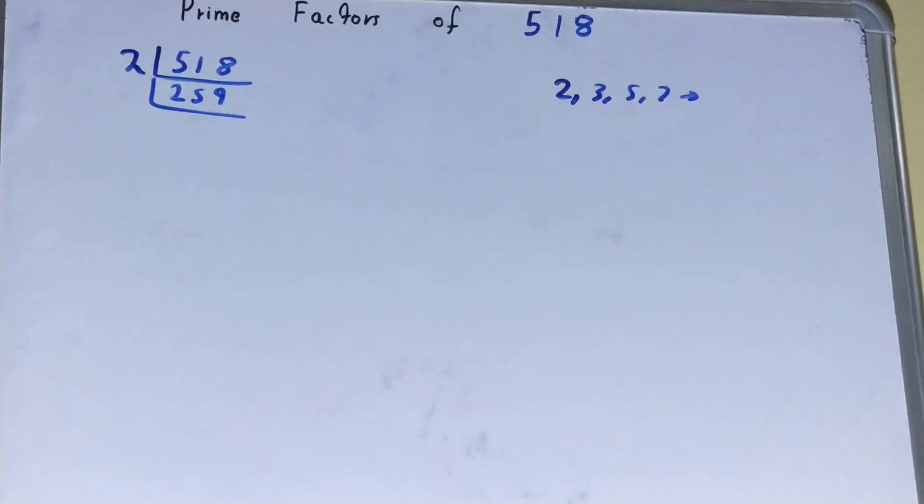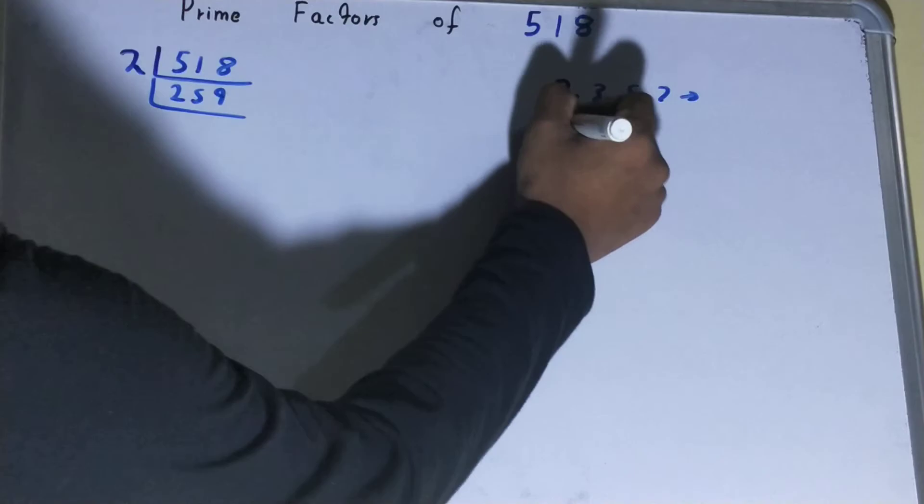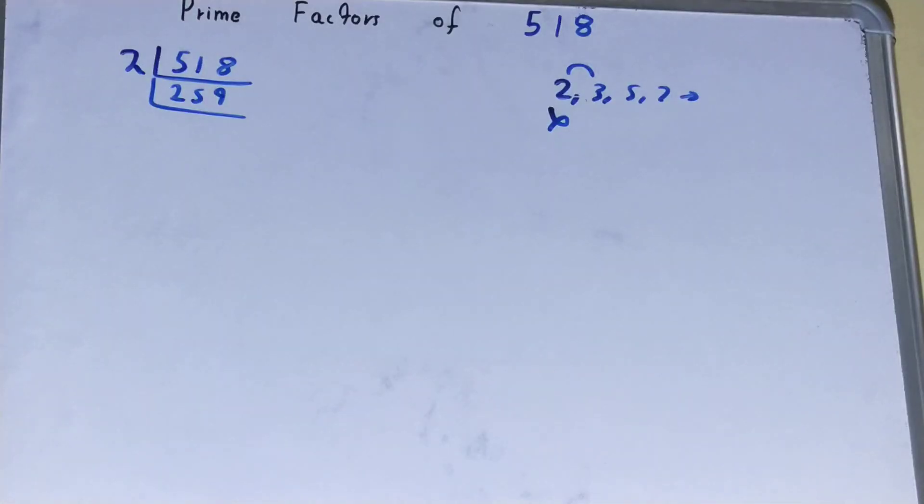Now, is the number 259 divisible by 2? The answer is no, because it is an odd number. So we will go to the next lowest prime number, that is 3. Is the number 259 divisible by 3? Let's check. No, it is not divisible by 3.